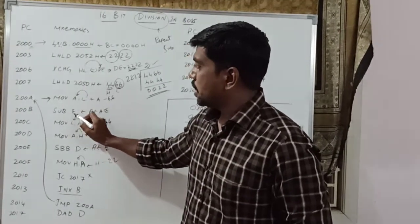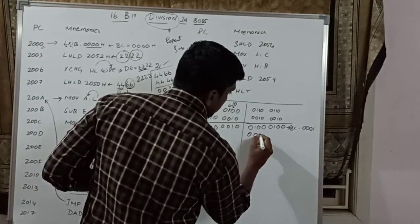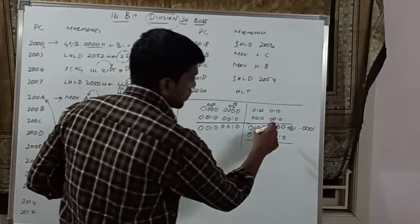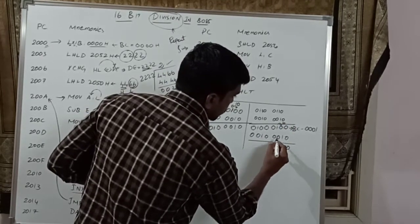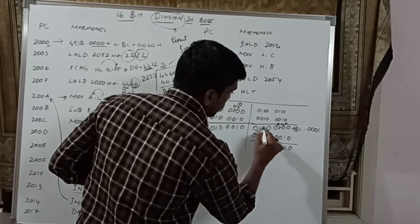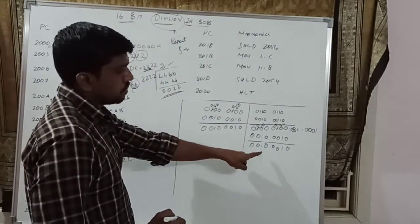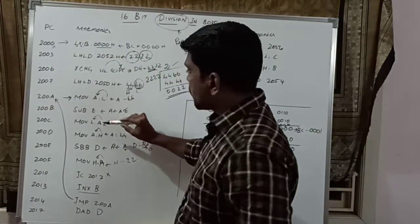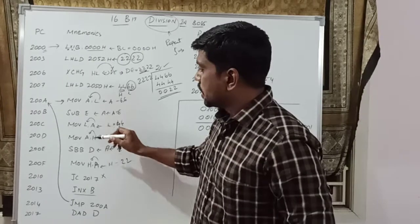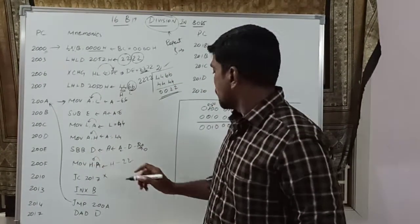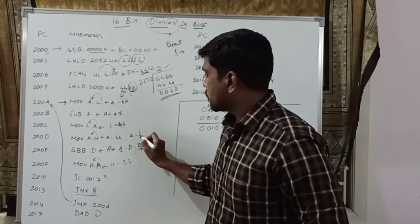The next instruction is SUB E — subtract E value from accumulator value. Accumulator value is 44H, E value is 22H. After subtracting, the result is 22H. The accumulator content is moved to L register. The next instruction at 200DH is MOV A, H — H value is 22H, so 22H is transferred to A register. After execution, A value is 22H.